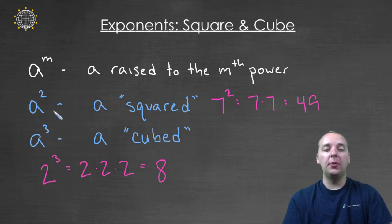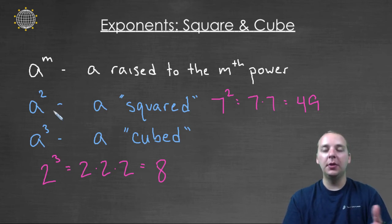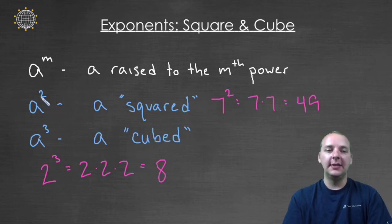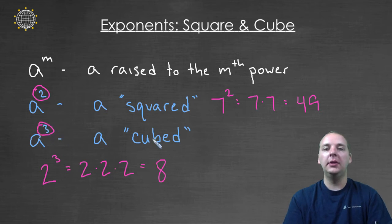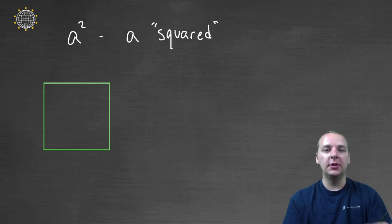Now the second power and the third power are the only powers that we have these special names for. There's not a similar special name for the fourth power or the fifth power — just second power means squared and third power means cubed. And believe it or not, there's actually a solid reason why we use these words.